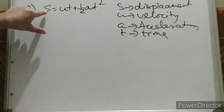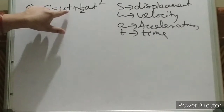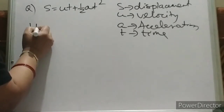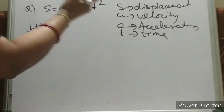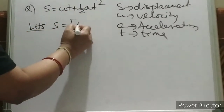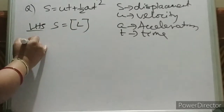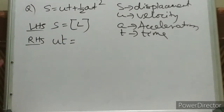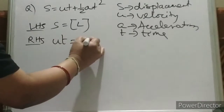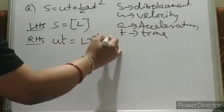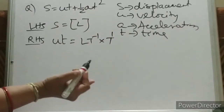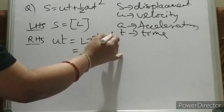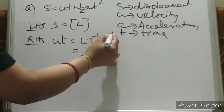Let us start with LHS. S is displacement, so that is distance. The dimension of S is simply L. Now come to the first term of RHS, that is UT. The dimension of velocity is L T⁻¹, and the dimension of T is T¹. So it is L T⁻¹ multiplied by T¹. When you multiply, the powers get added up: minus 1 plus 1 equals 0, so it becomes L.